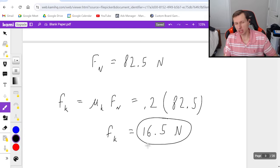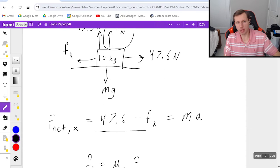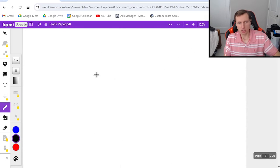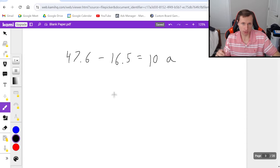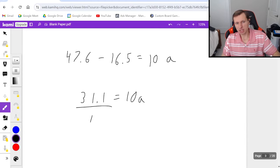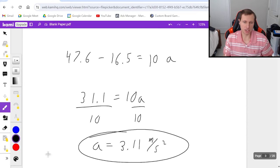Now if I want to find acceleration, it's pretty easy from here. We're just going to plug back into this equation right here. So in other words, 47.6 minus the frictional force, 16.5 is equal to the mass, which is 10 times the acceleration, which is unknown. That's what we're solving for. So 47.6 minus 16.5 is 31.1 equals 10a. Divide both sides by 10. And we'll get the acceleration equals 3.11 meters per second squared.